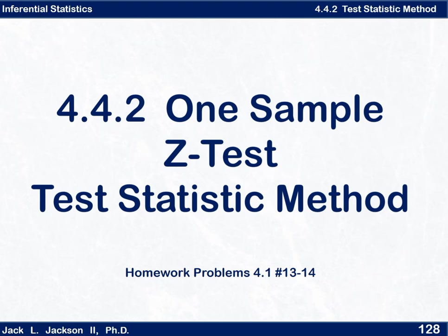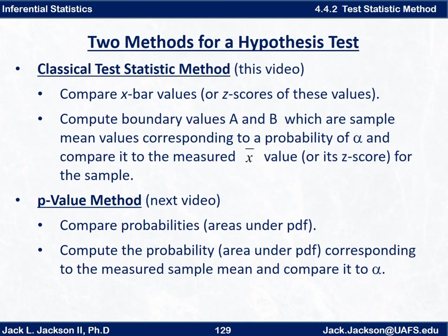In this one we're going to actually see how we perform a hypothesis test, and for this we're going to start with looking at what's called a one sample two-tailed z-test. Now there are actually two basic methods for a hypothesis test. One is the classical test statistic method that's going to be demonstrated in this video, and the other is the p-value method that will be going over in the next video.